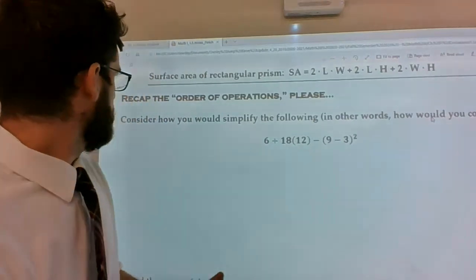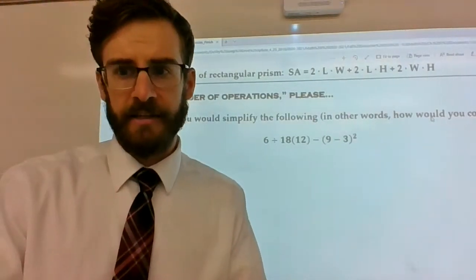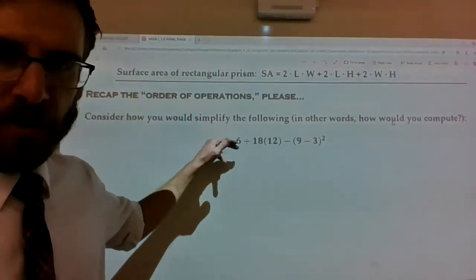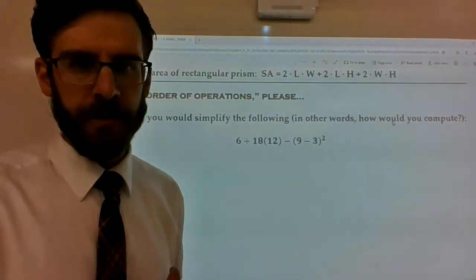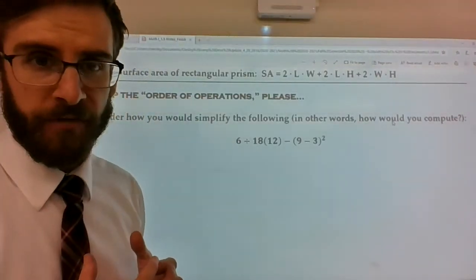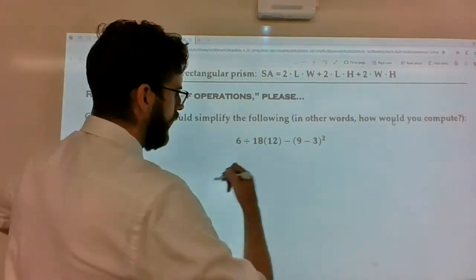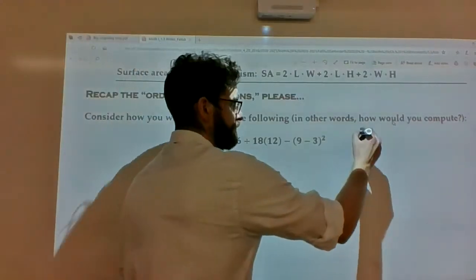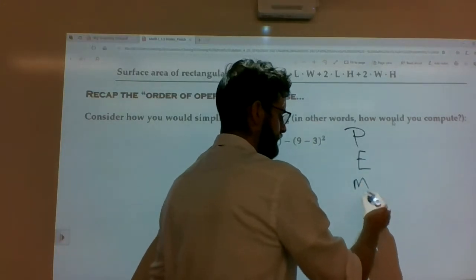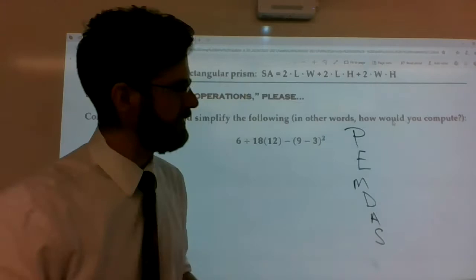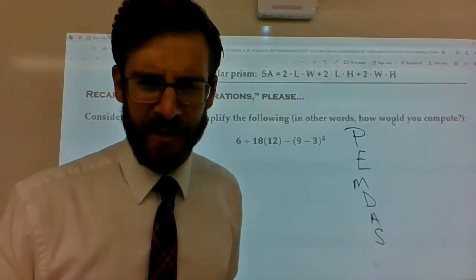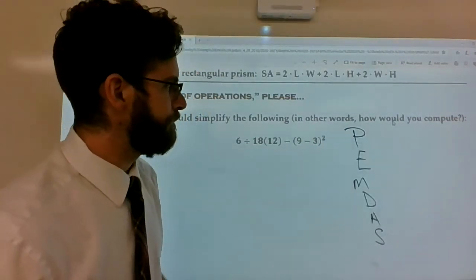So it basically just says, recap the order of operations, consider how you'd simplify it, basically asking the question, in what order would we do all these computations? And since we're doing everything without a calculator to make sure we have that computational knowledge, we really need to know our order of operations. We need to know our stuff. So if you recall, there was sort of this acronym that allowed us to think our way through it. PEMDAS, you know, when I was a student, they would say, please excuse my dear Aunt Sally. I don't think they use that much these days, but I could be wrong.